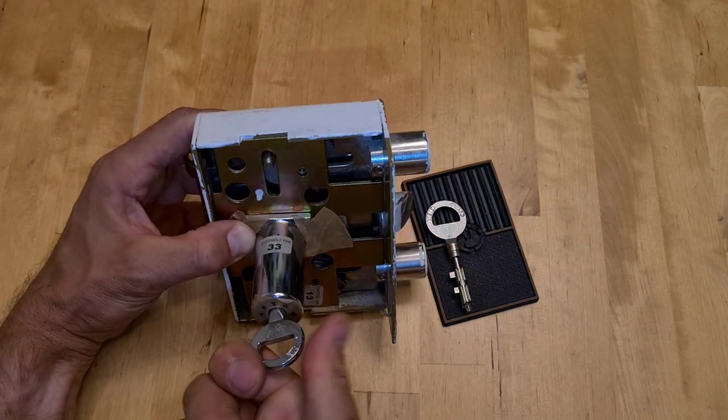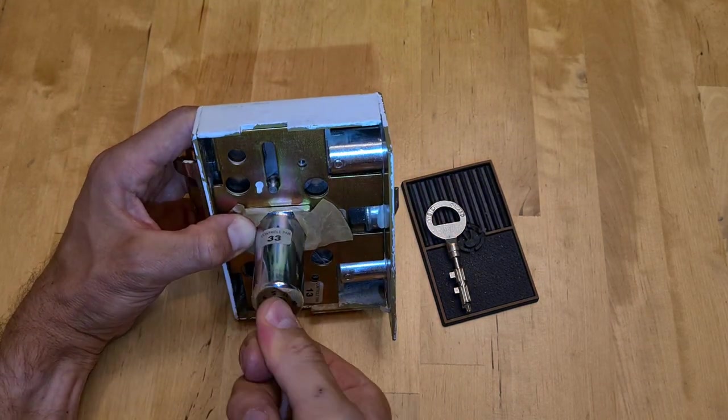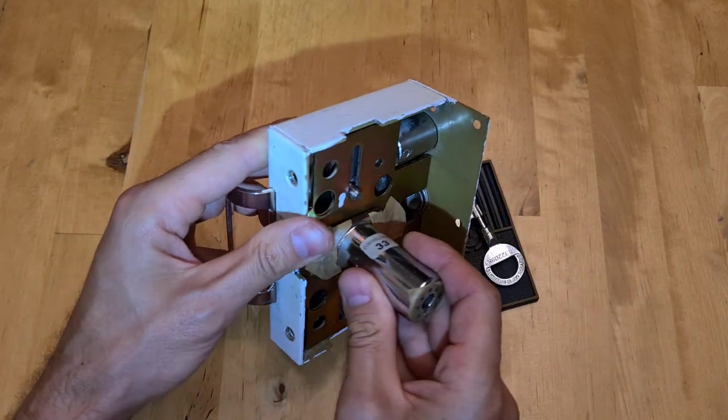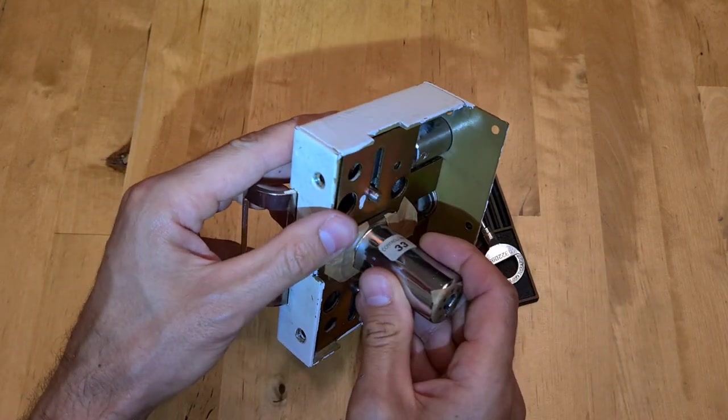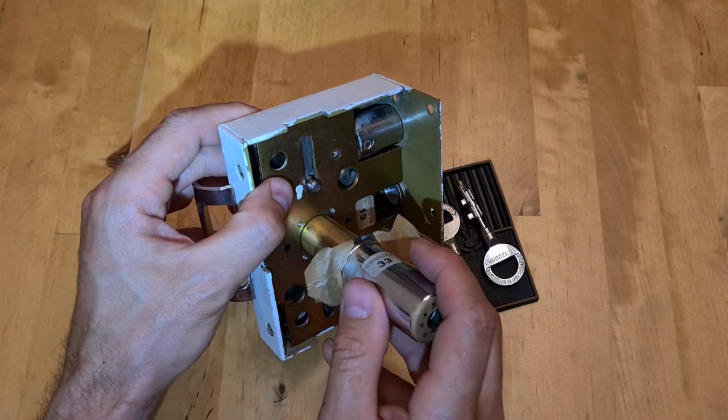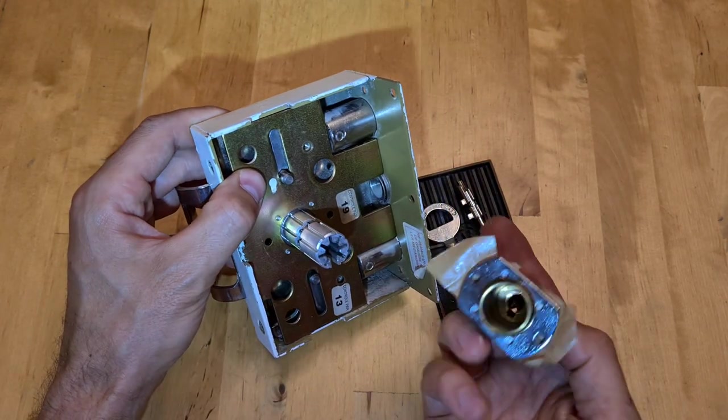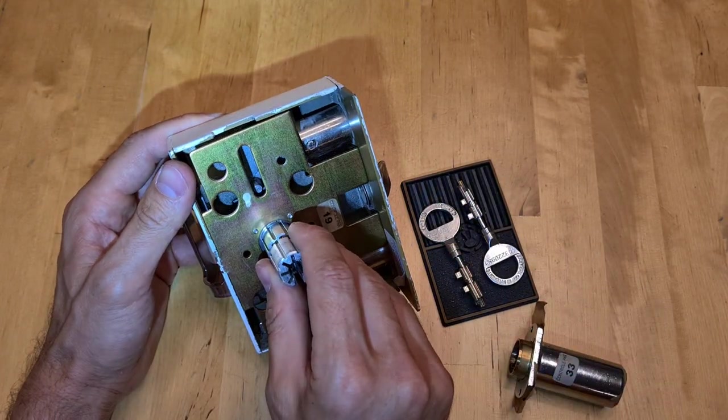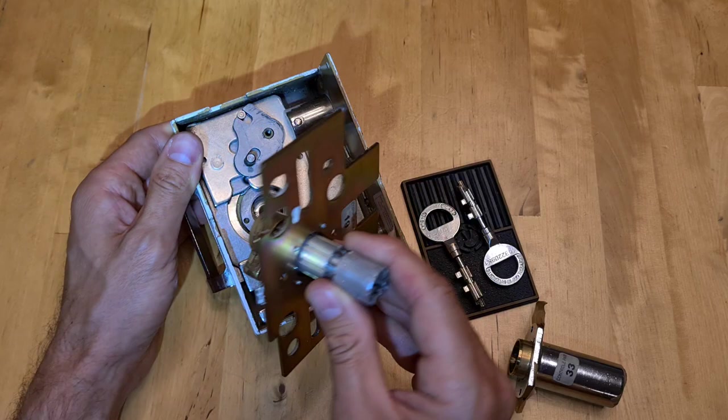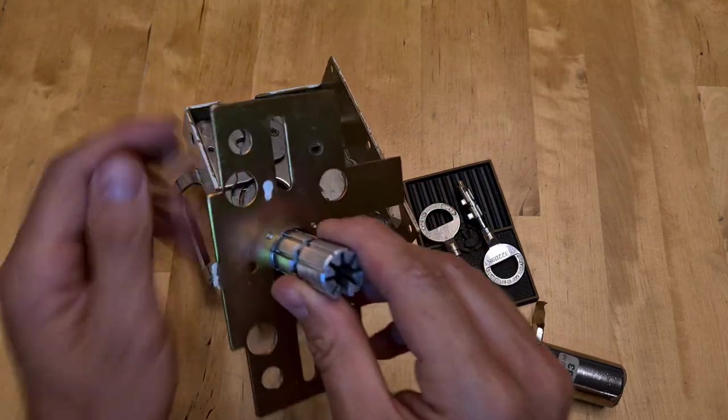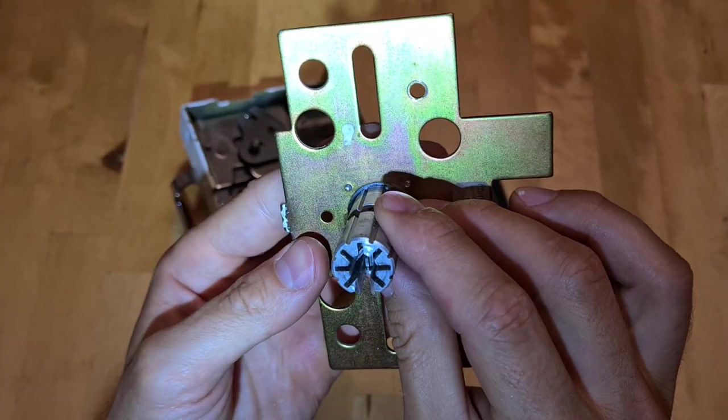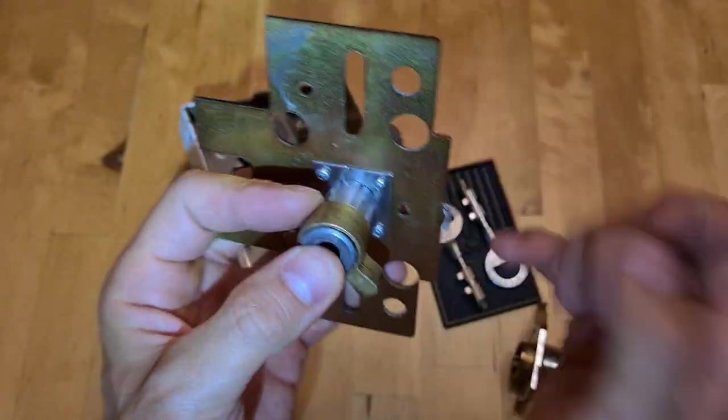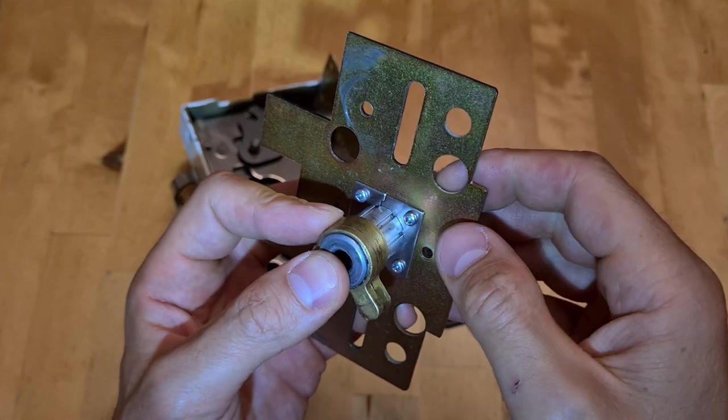It's half disassembled here and it's working, so I can open it and close it. I want to show what's inside because it's quite different from pin tumbler locks and even from other French Brahma-style locks. So it is a Brahma-style lock, here's the core, it's being blocked by those plates here.